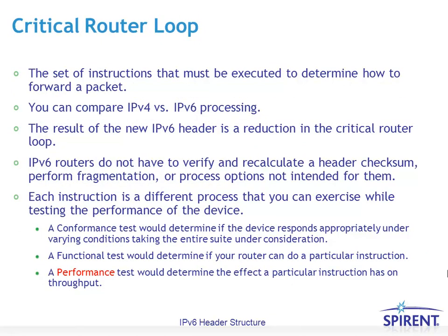When comparing IP headers, we consider it in terms of the critical router loop — a set of instructions that must be executed to determine how to forward a packet. The IPv6 header results in a reduction in the critical router loop, meaning it's easier for routers to process. There are a lot of things routers don't have to do with IPv6 that they did with IPv4, such as recalculate a header checksum, perform fragmentation, or process options not intended for them.